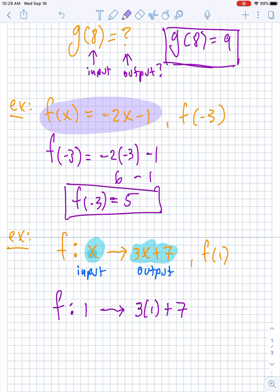So 3 times 1 is 3 plus 7 is 10, so f of 1 is equal to 10.